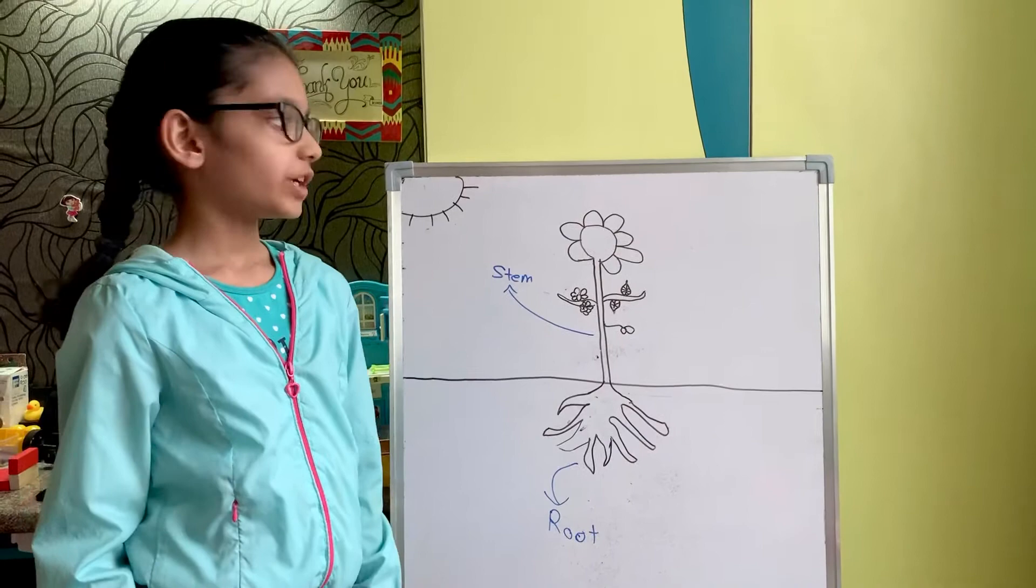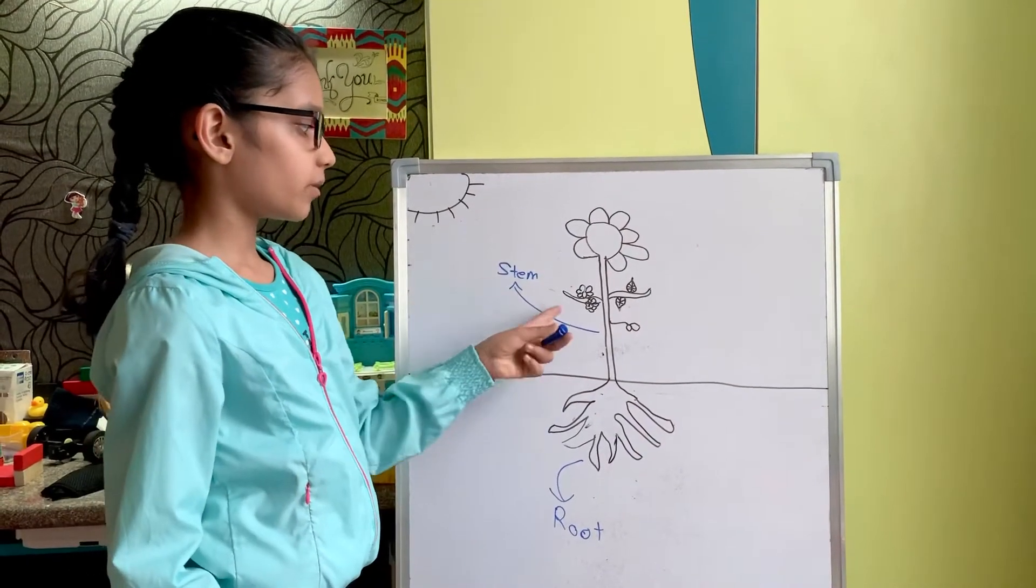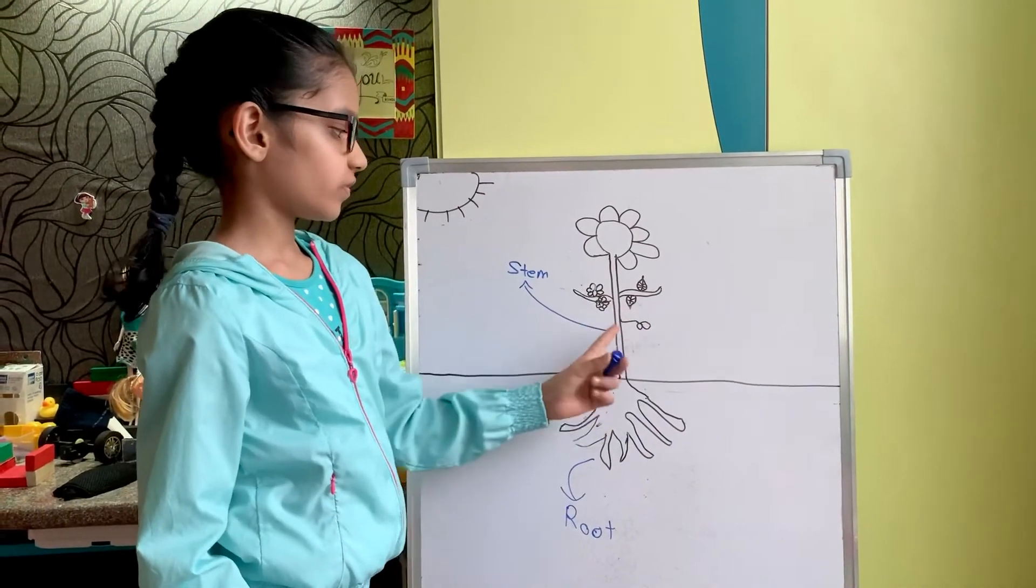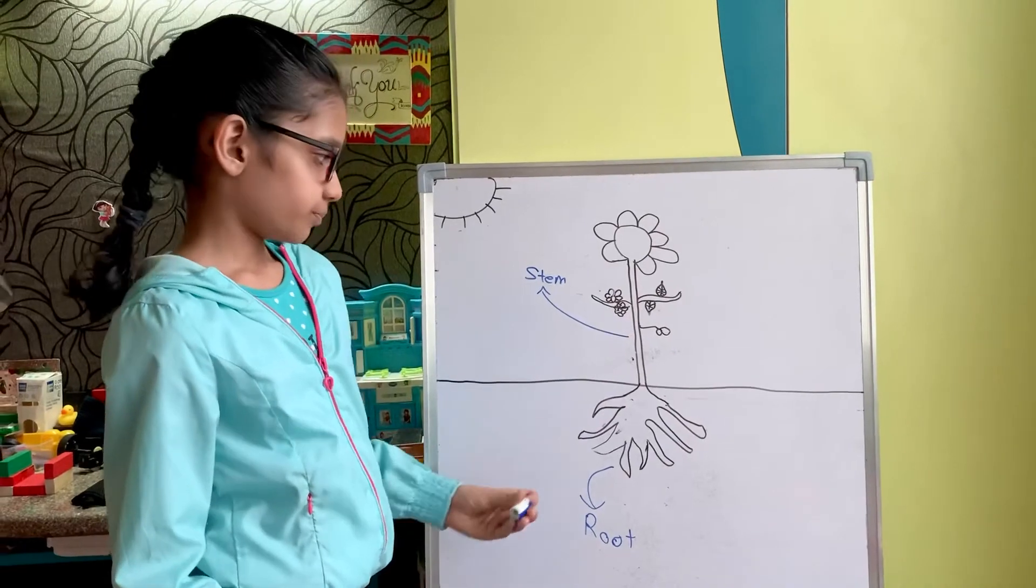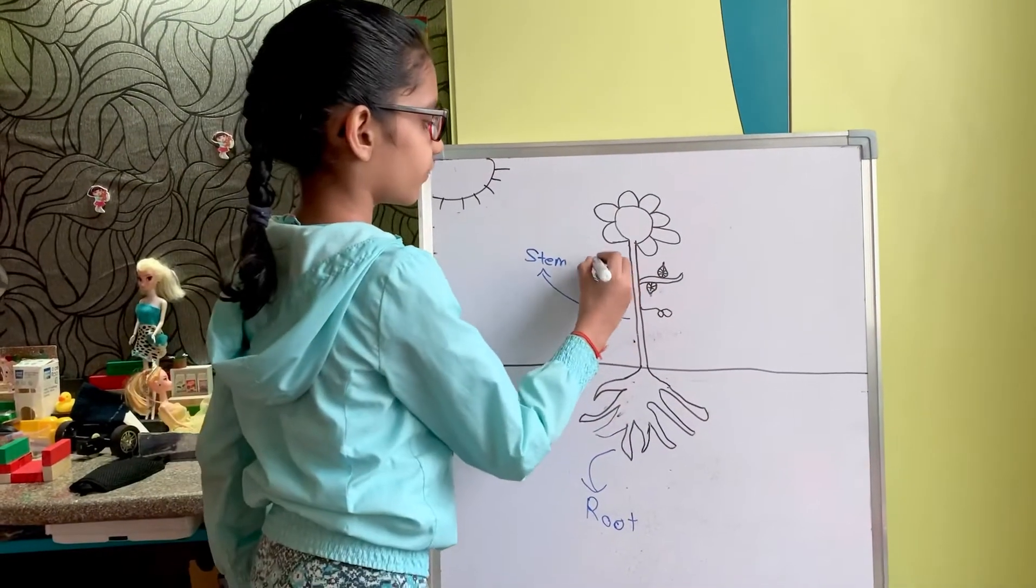What will happen if there is no stem? It will not be able to hold the flower, branches, and other branches with fruits. And so next we have the flower.